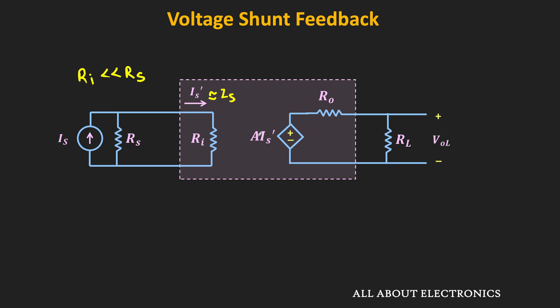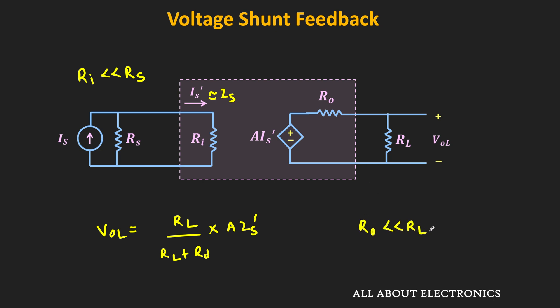Similarly, on the output side of the trans-impedance amplifier, there will also be a load resistor. The actual voltage reaching the load, Vol, equals RL divided by (RL plus R0) times A times Is'. We get more output voltage across the load resistor whenever R0 is much less than RL. Since the output impedance also reduces in this feedback topology, that is also a desired thing for the trans-impedance amplifier. So both input and output impedance of the feedback amplifier reduce when using this voltage-shunt feedback topology.